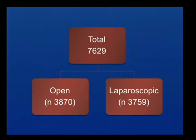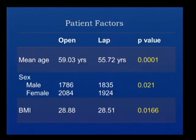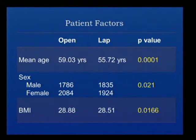We had around 7,600 cases from the database, divided into two groups: the open group had 3,870 and the laparoscopic group had 3,759. When comparing patient factors, the open group was significantly older by almost four years (p=0.001). There were more males in the open group than the laparoscopic group, and there was also a significant difference in BMI, which reached statistical significance given the large sample size.